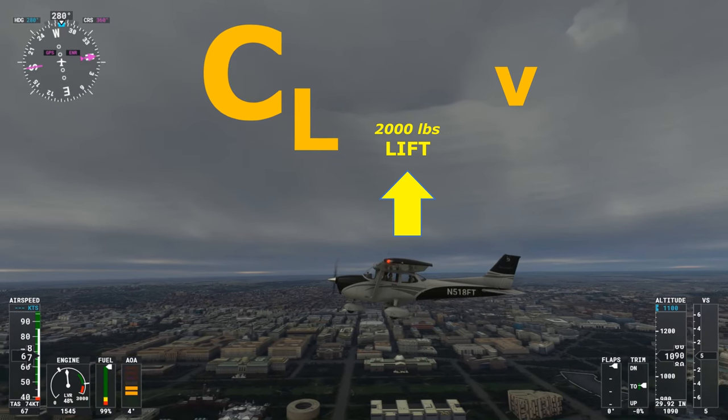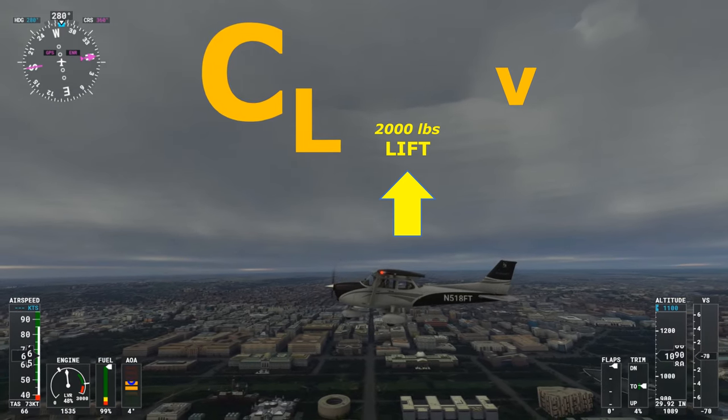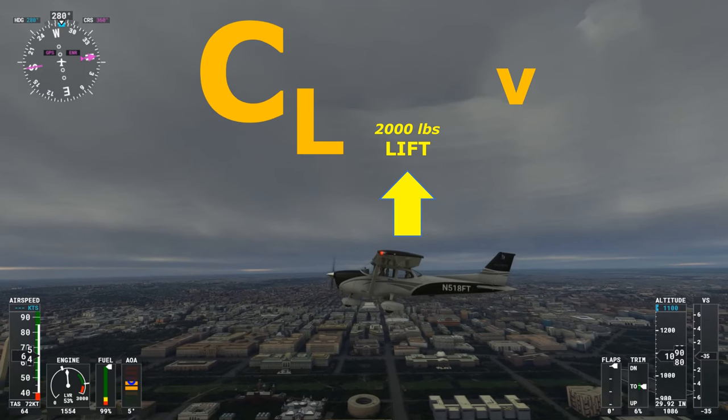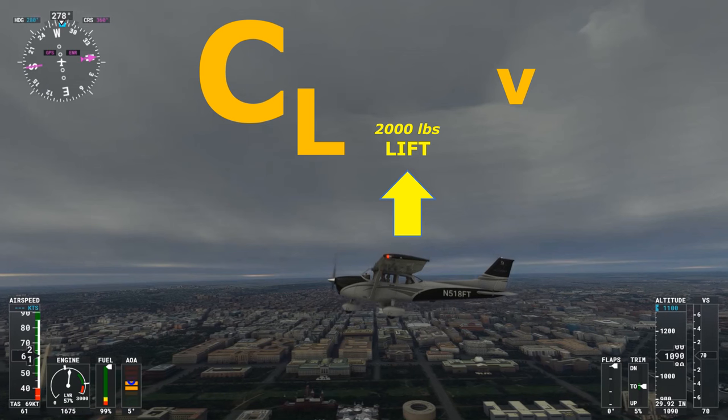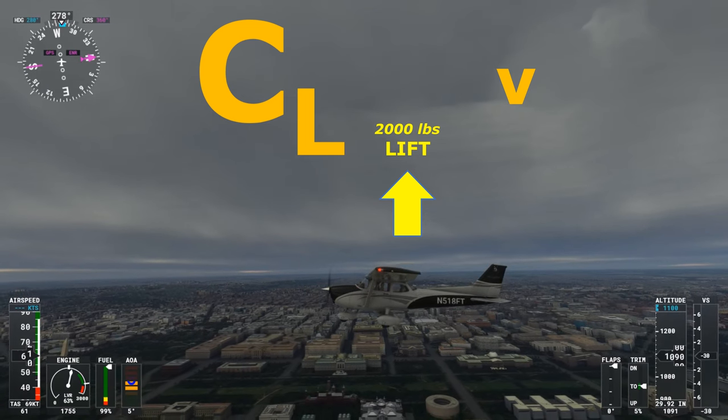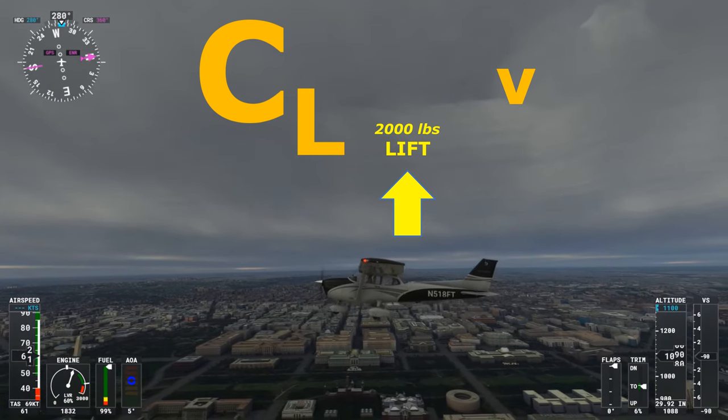You may recognize this as the slow flight maneuver from your private pilot training. As our speed decreases and angle of attack creeps higher, coefficient of lift gets larger and V gets smaller. Before long, we've reached a new equilibrium.